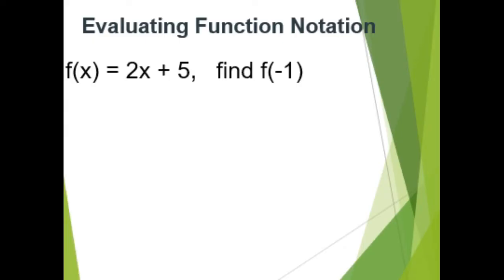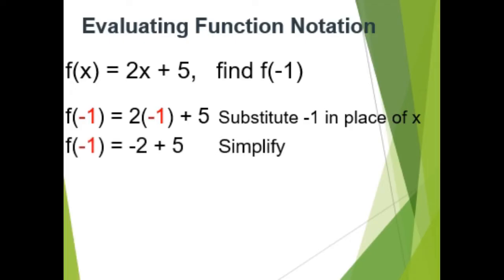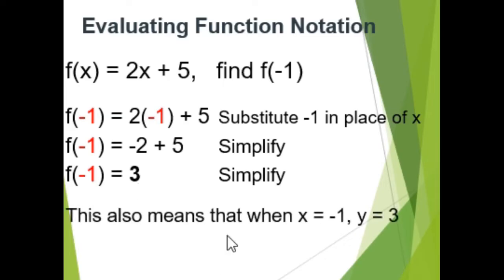Next, evaluate f of x equals 2x plus 5. Find f of negative 1. Substituting negative 1 in place of x: f of negative 1 equals 2 times negative 1 plus 5. Simplifying: 2 times negative 1 is negative 2 plus 5. f of negative 1 is 3. This also means that when x is negative 1, then y is 3.